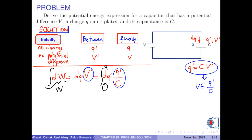Because C is constant, it can be taken outside the integral sign. Therefore, we obtain 1 over C times integral from 0 to Q, Q' dQ'.